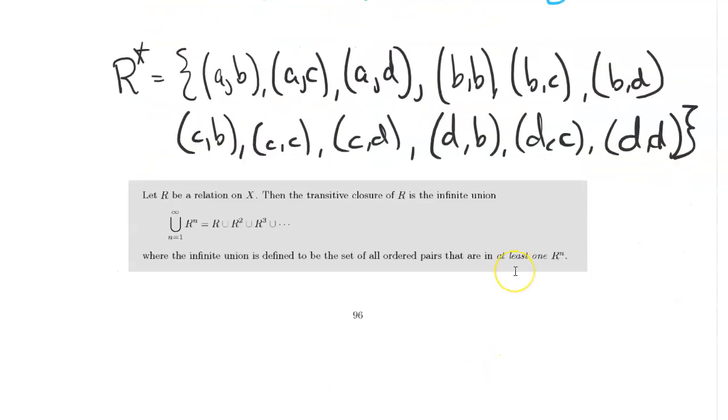Easier to say, maybe, is that R star is also the union of R, R², and R³. That's an easier way to write it down, and that's what this following theorem says. Let R be a relation on X, then a transitive closure R is the infinite union, which is not on here denoted R star, although it should be. It's the infinite union of R, R², R³, etc., where the infinite union is the set of all ordered pairs that are at least one of these compositions. So since R⁴, we kind of ran out of new pairs, we only had to take the finite relation R, R², R³, but in general that's still an infinite union with empty sets.